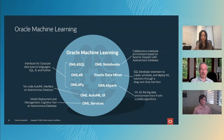OML for Python and OML for R are the Python and R language interfaces. These allow you to manipulate database tables and views using familiar functions and syntax, while also exposing the in-database algorithms using native APIs. These also support integrated deployment of user-defined R and Python functions.